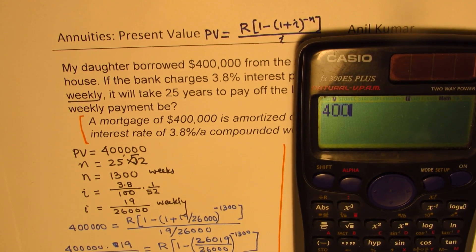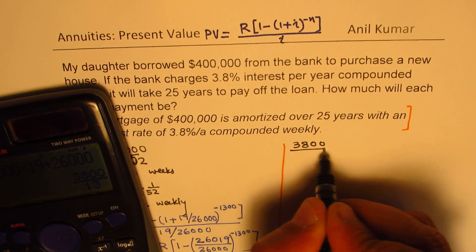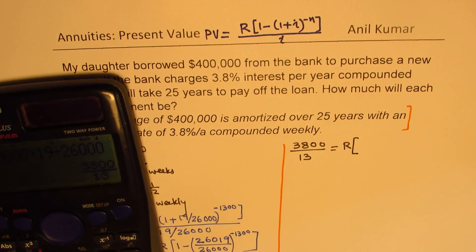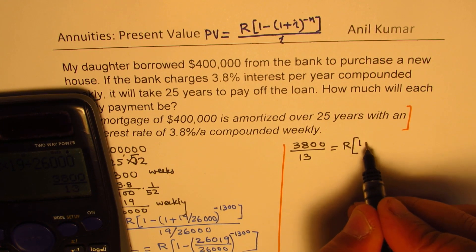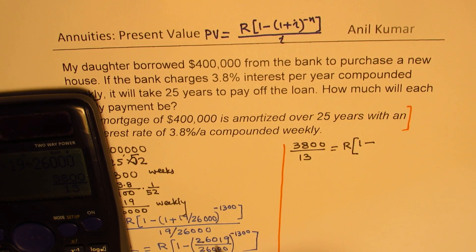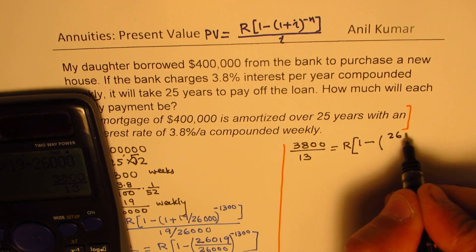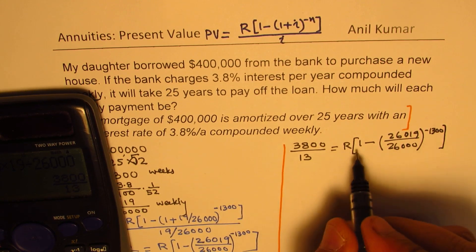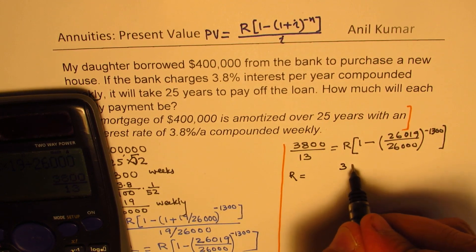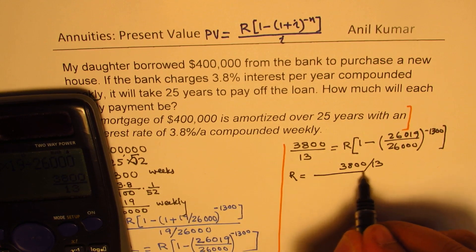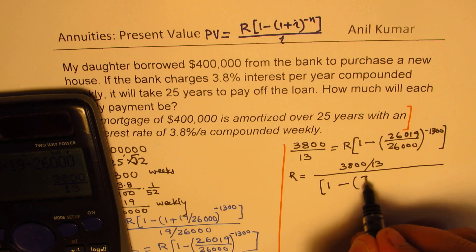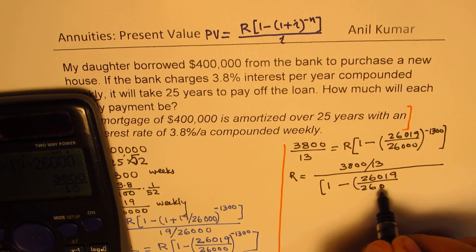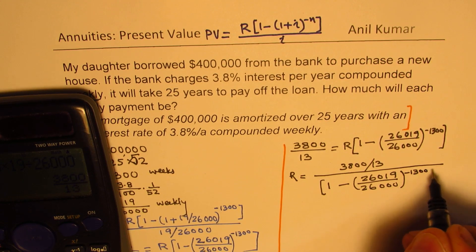Simplifying: 400,000 times 19 divided by 26,000 gives us 3,800 over 13. So R equals (3,800/13) divided by [1 minus (26,019/26,000) to the power of minus 1,300]. We use brackets carefully in the calculator: 1 minus, then (26,019 divided by 26,000) to the power of minus 1,300.